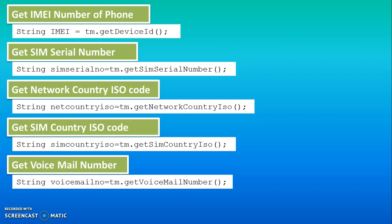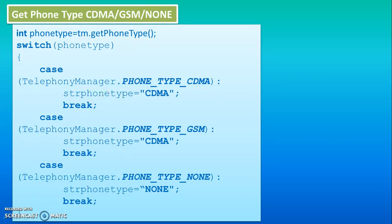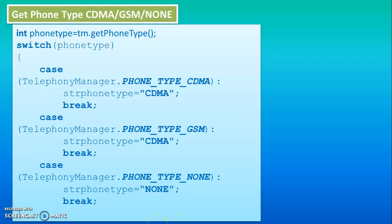For getting phone type information, first declare an integer variable, because values like PHONE_TYPE_CDMA, PHONE_TYPE_GSM, and PHONE_TYPE_NONE return integer values. We have three cases: if your phone is CDMA type, return that value using a string variable with the appropriate message. Case 2 is PHONE_TYPE_GSM with a different value, and the third case is PHONE_TYPE_NONE if it does not belong to CDMA or GSM.